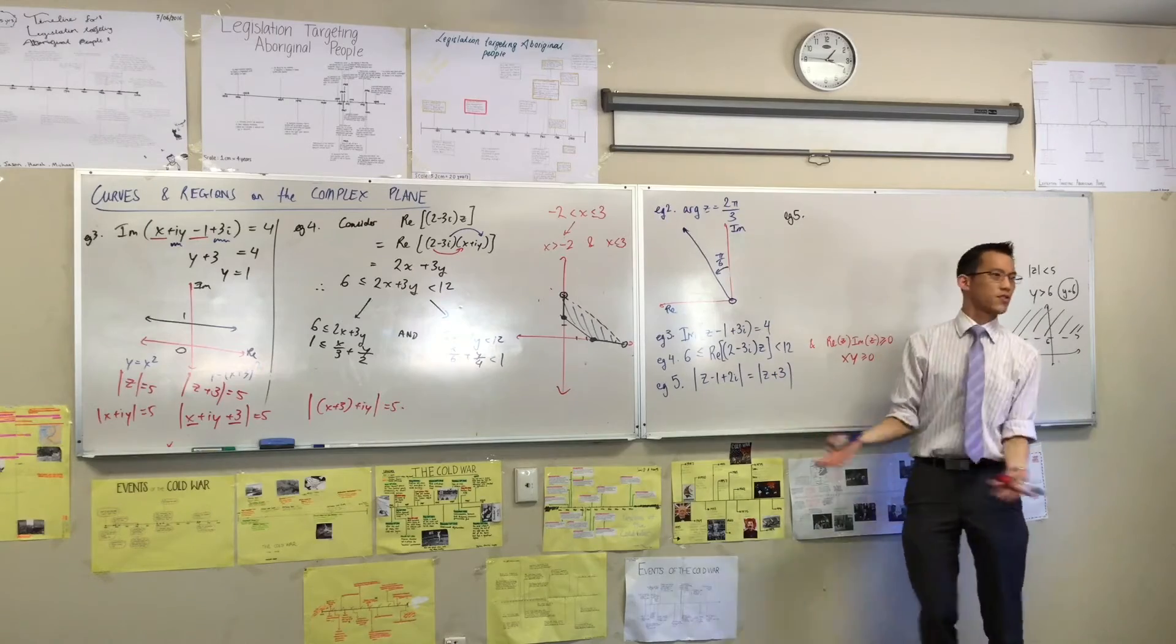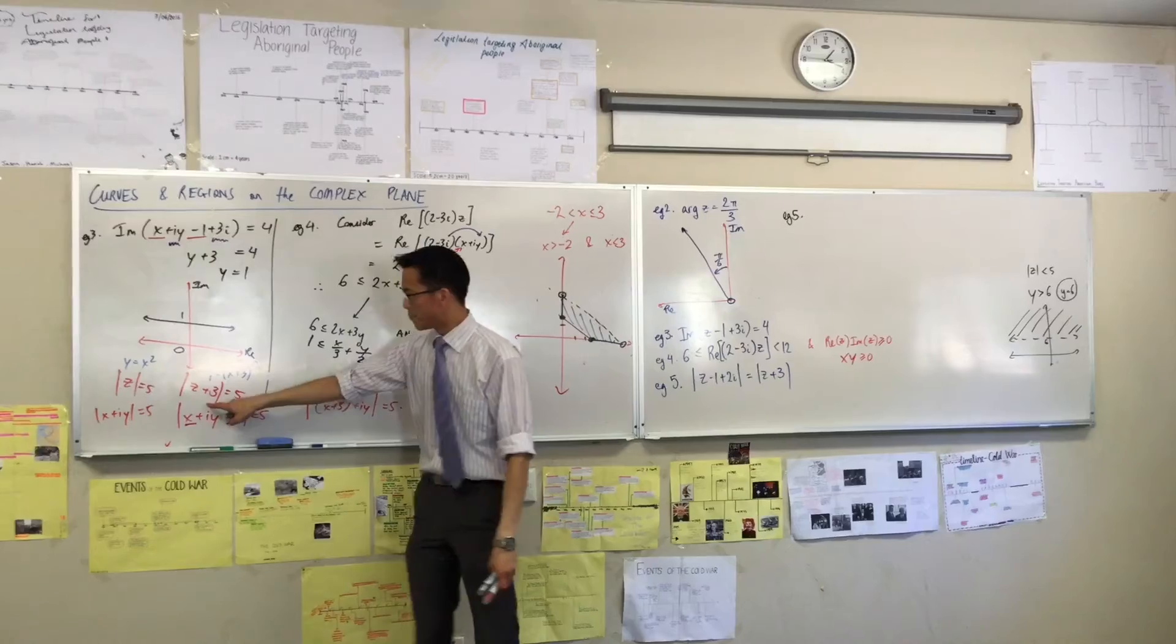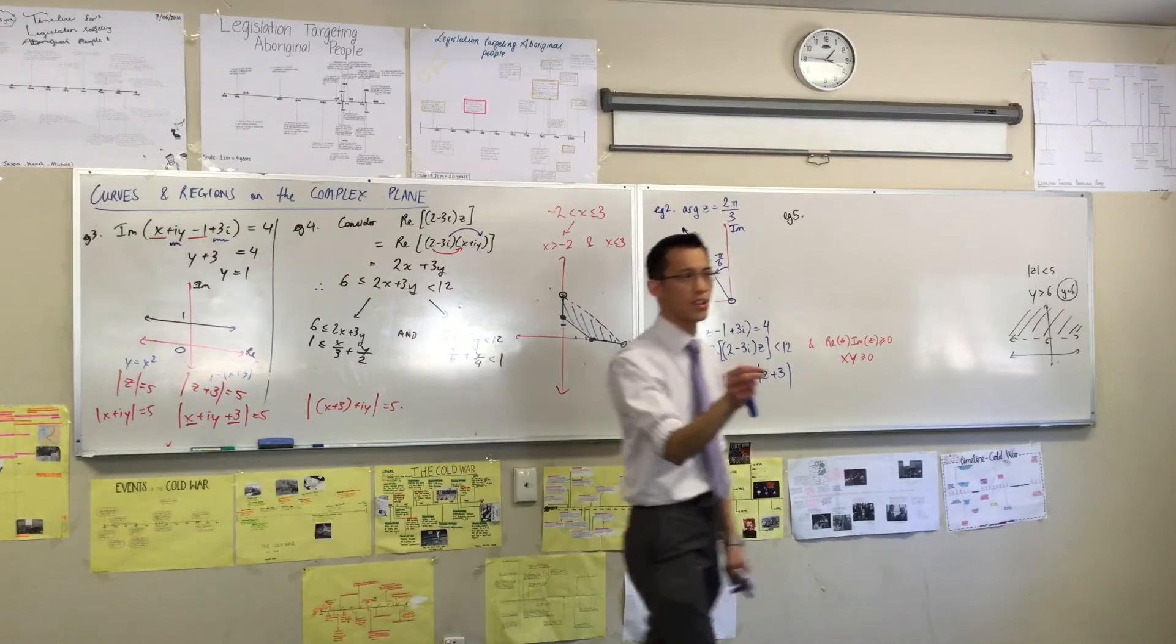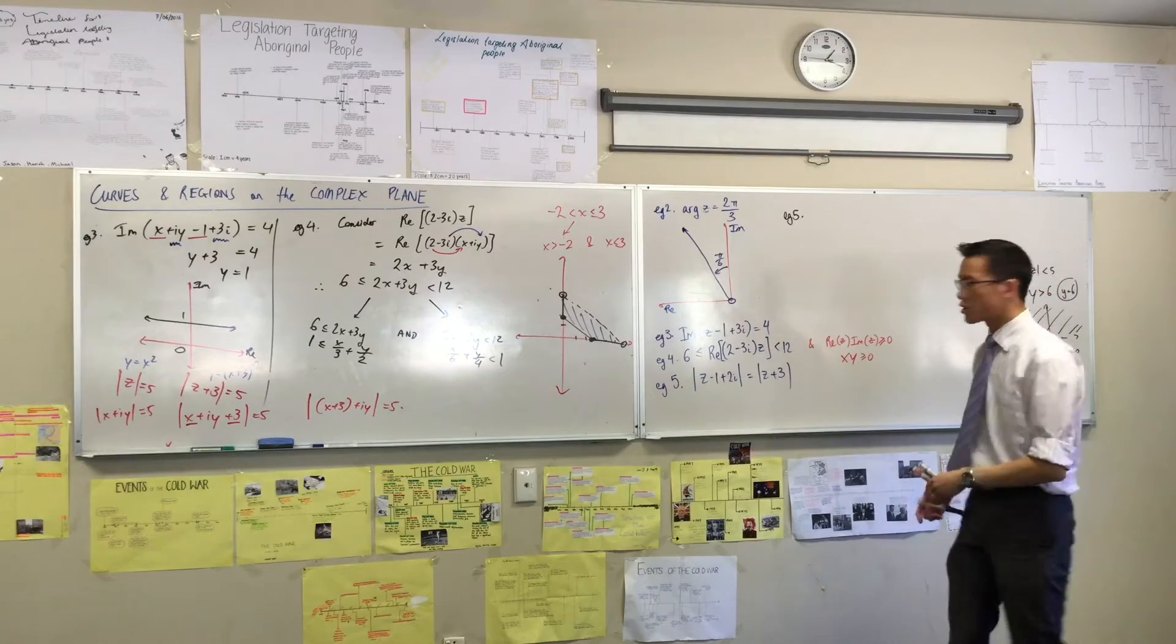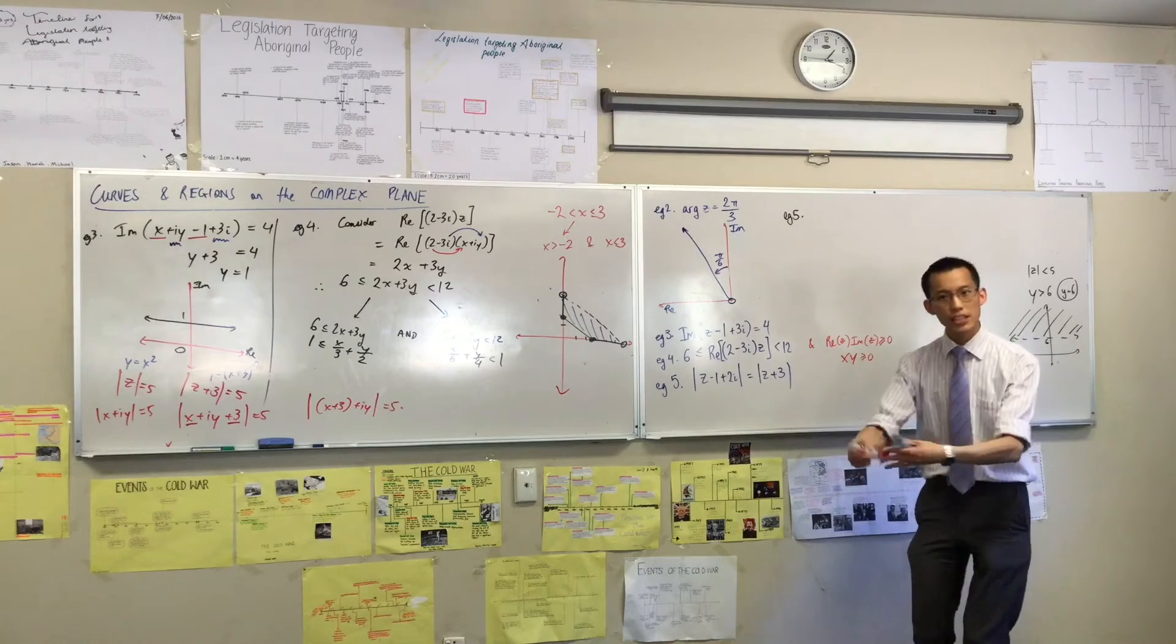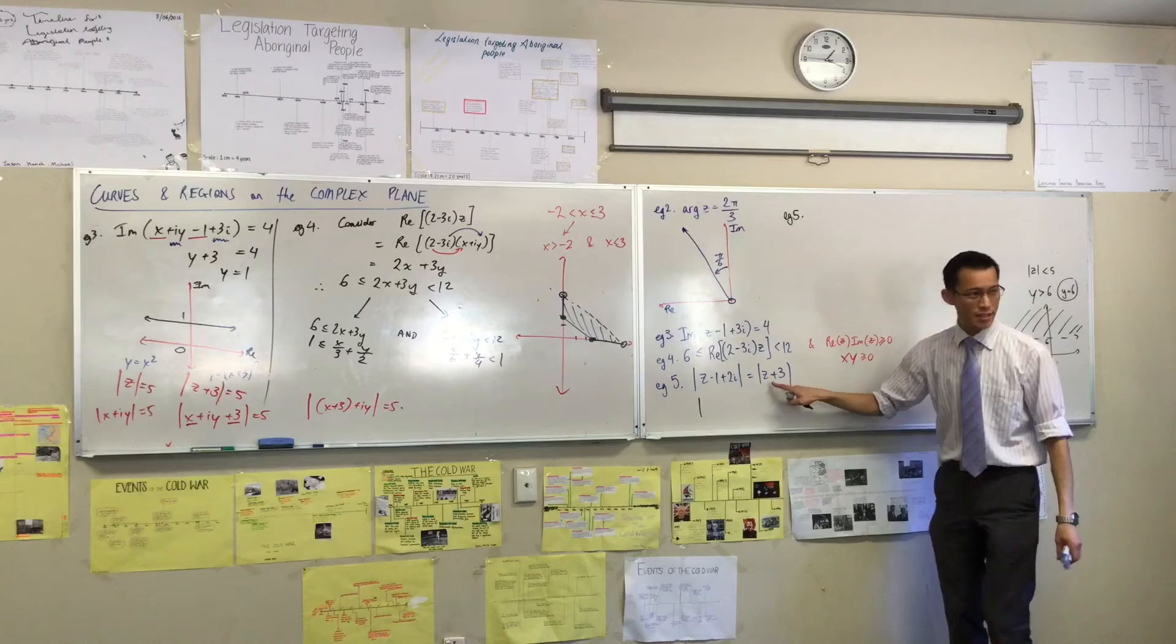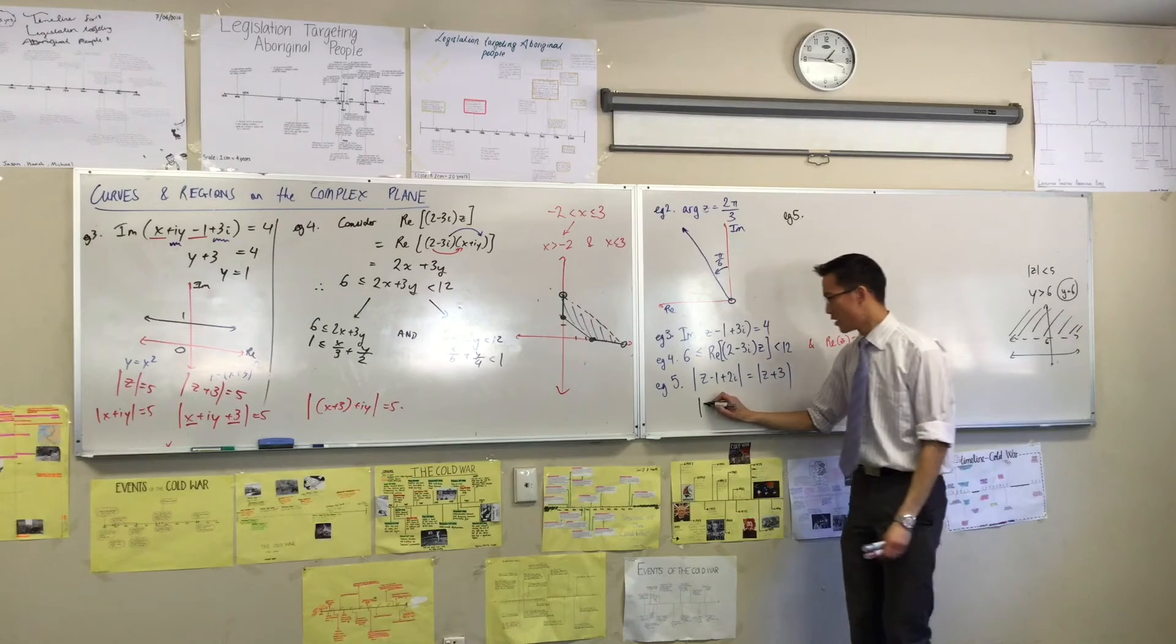This is not the distance from the origin. This is the distance from the origin. This is the distance from, what was the center of the circle again? The center of the circle is negative 3. So actually this is something worth putting underneath here. Generally speaking...